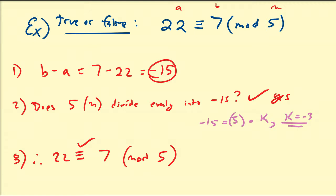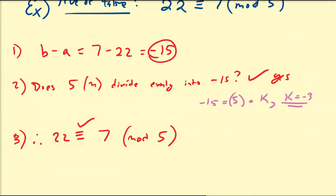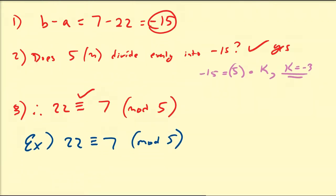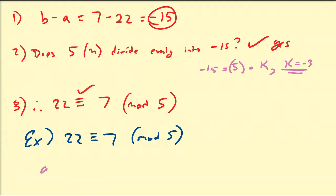We can also approach it from a different direction. Instead of doing b minus a, we can also do a minus b. So looking at 22 congruent to 7 modulo 5 again, a minus b is just going to be 22 minus 7. That's going to be positive 15. And of course, 5 divides evenly into 15. So that's no issue.